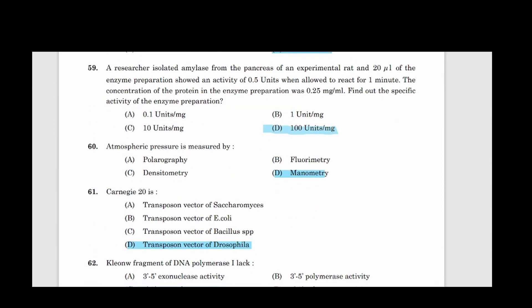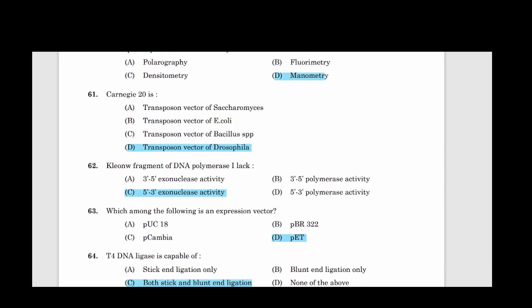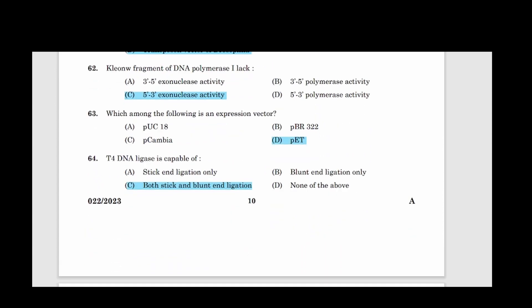60: Atmospheric pressure is measured by. Answer option D, Manometry. 61: Carnegie 20 is. Answer option D, Transposon vector of Drosophila. 62: Klenow fragment of DNA polymerase 1 lacks. Answer option C, 5'-3' exonuclease activity. 63: Which among the following is an expression vector? Answer option D, pET. 64: T4 DNA ligase is capable of? Answer option C, Both sticky and blunt end ligation.